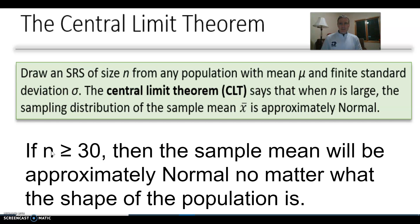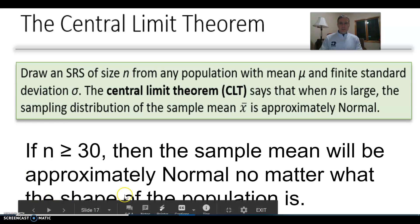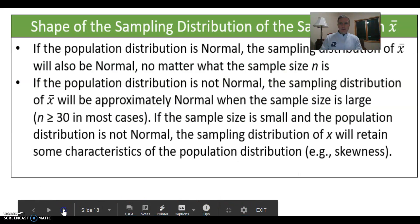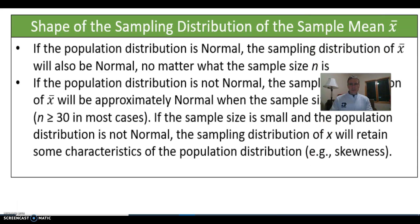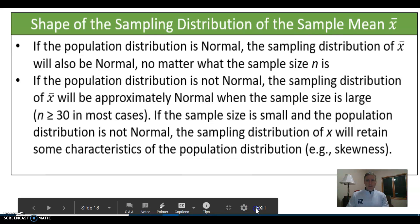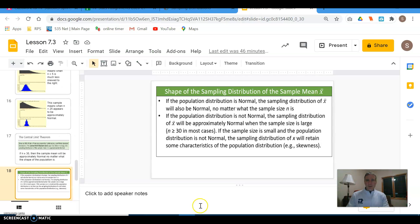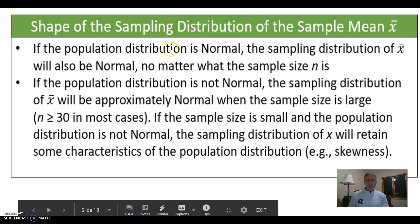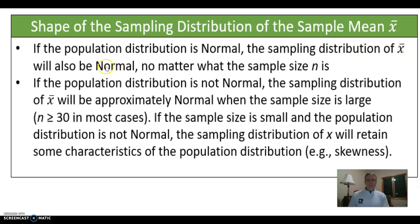That is a really important theorem — knowing that our sample mean is going to be approximately normal is crucial because sampling is central to statistics. If the population is normal to begin with, the sampling distribution of x-bar will also be normal no matter what the size of n is. If the population is not normal, we need a larger sample size; the sampling distribution of x-bar will be approximately normal when the sample size is large, like greater than or equal to 30.